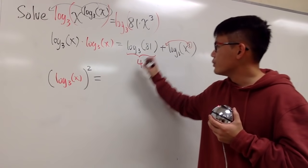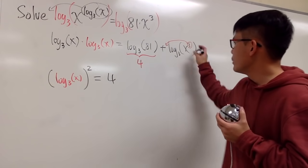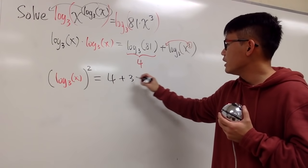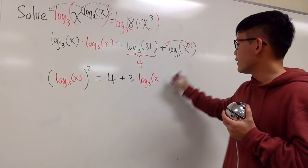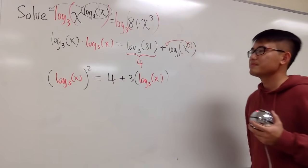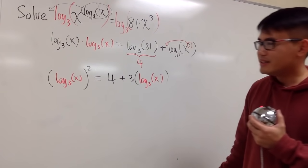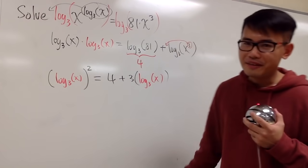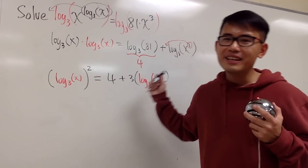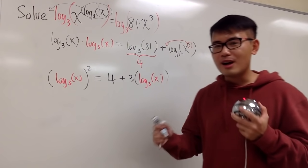This is equal to, this is 4, and then we have the 3 in the front, so we have plus 3. And this is another log base 3 of x that we have right here. Now you see, we have something to the second power, and this and that match. In fact, this is just a quadratic equation in terms of log base 3.